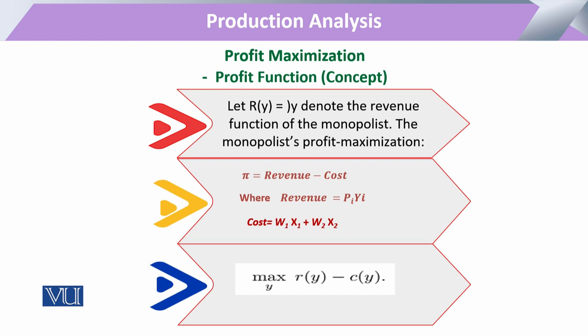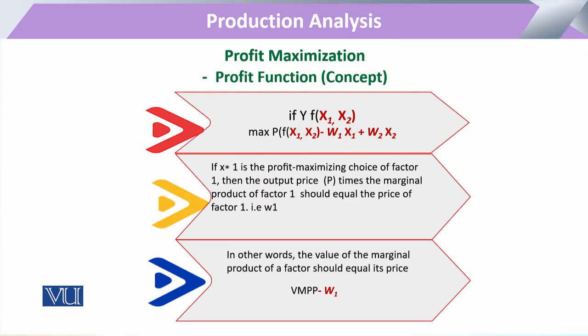In simple terms, profit is the difference of revenue minus cost, where revenue is the output price multiplied by the quantity of output. Cost is the sum of each input quantity multiplied by its input price. When we optimize or maximize this profit function, we maximize revenue for a given amount of cost, applying the profit maximization technique.